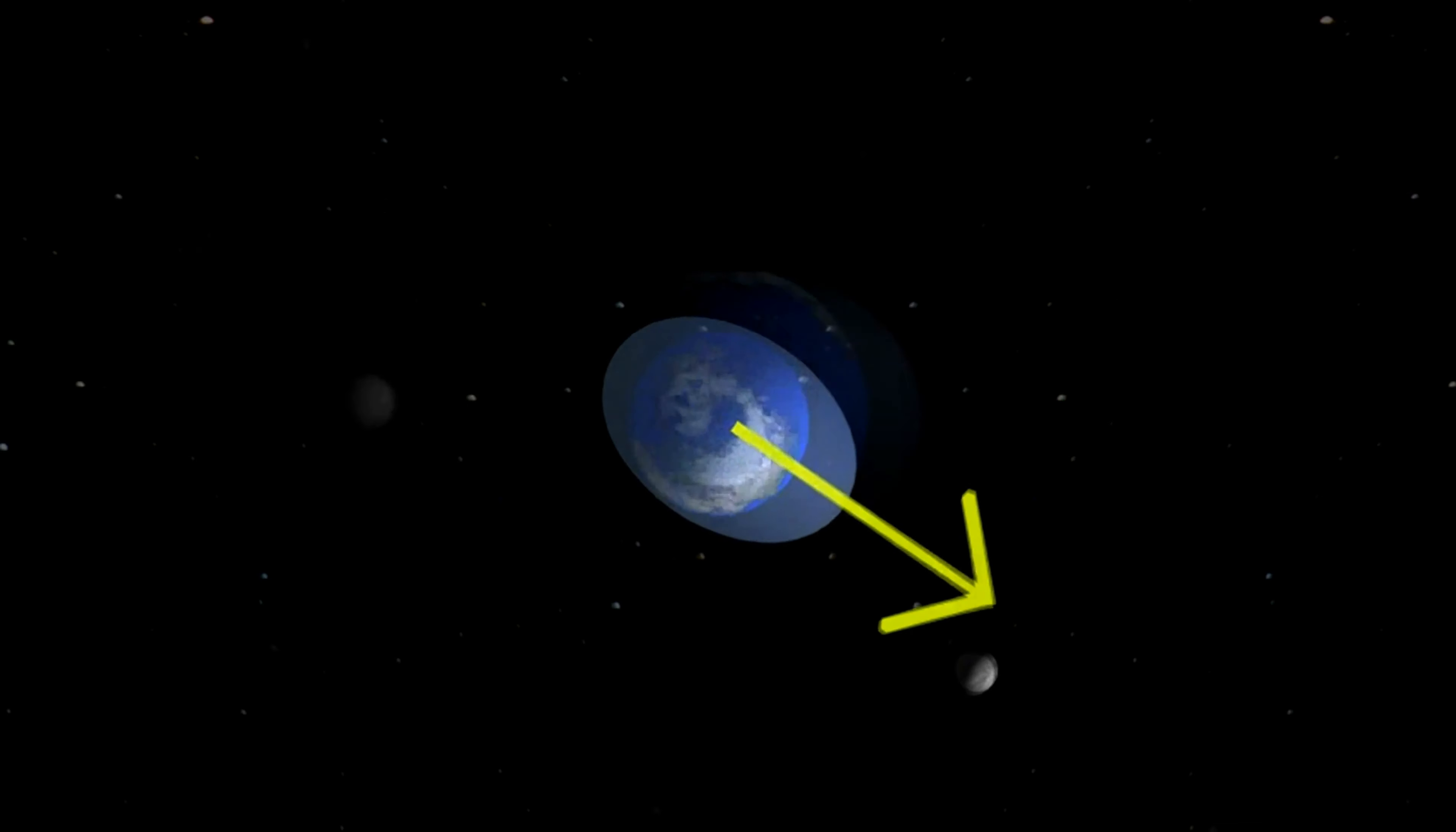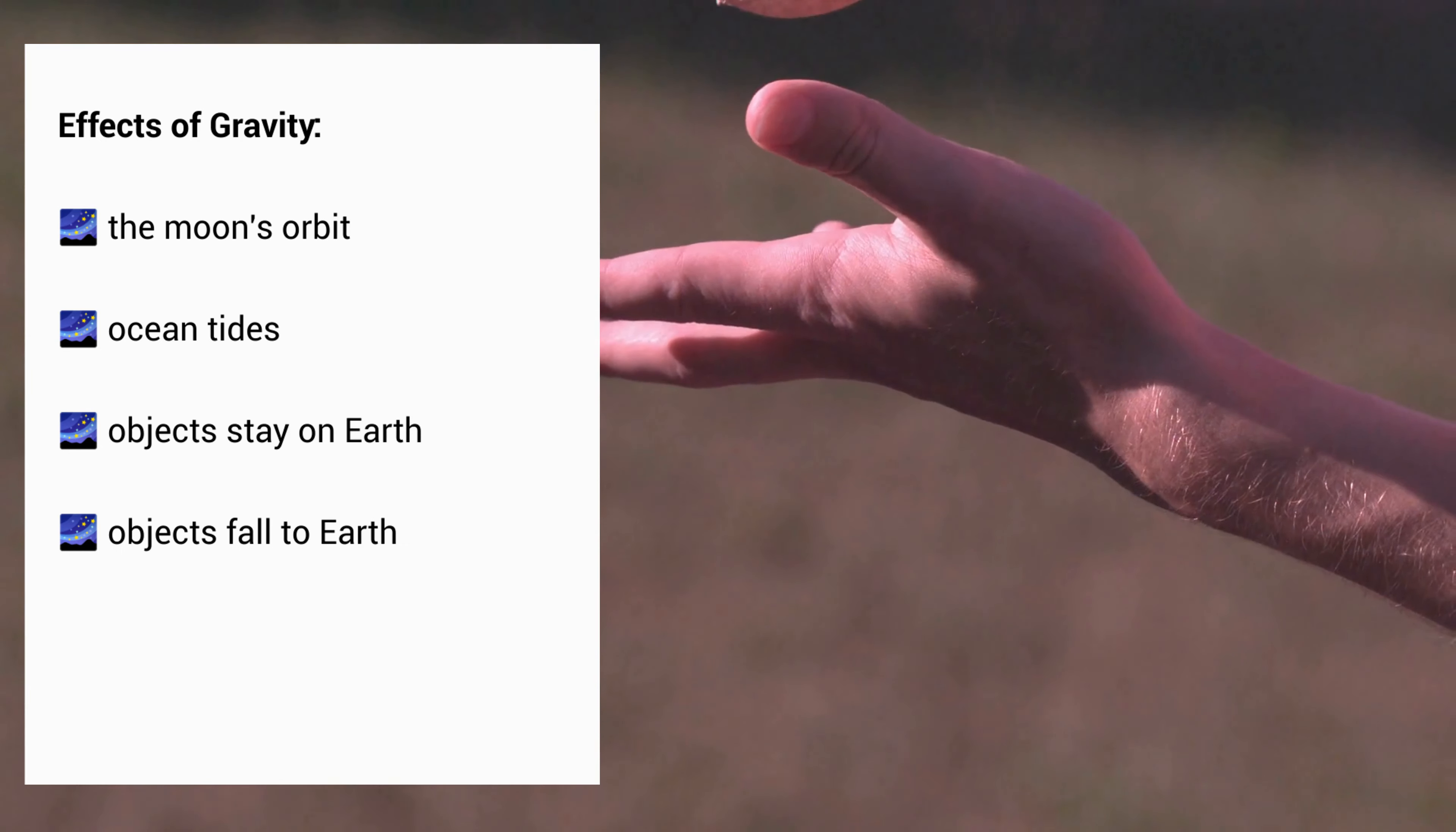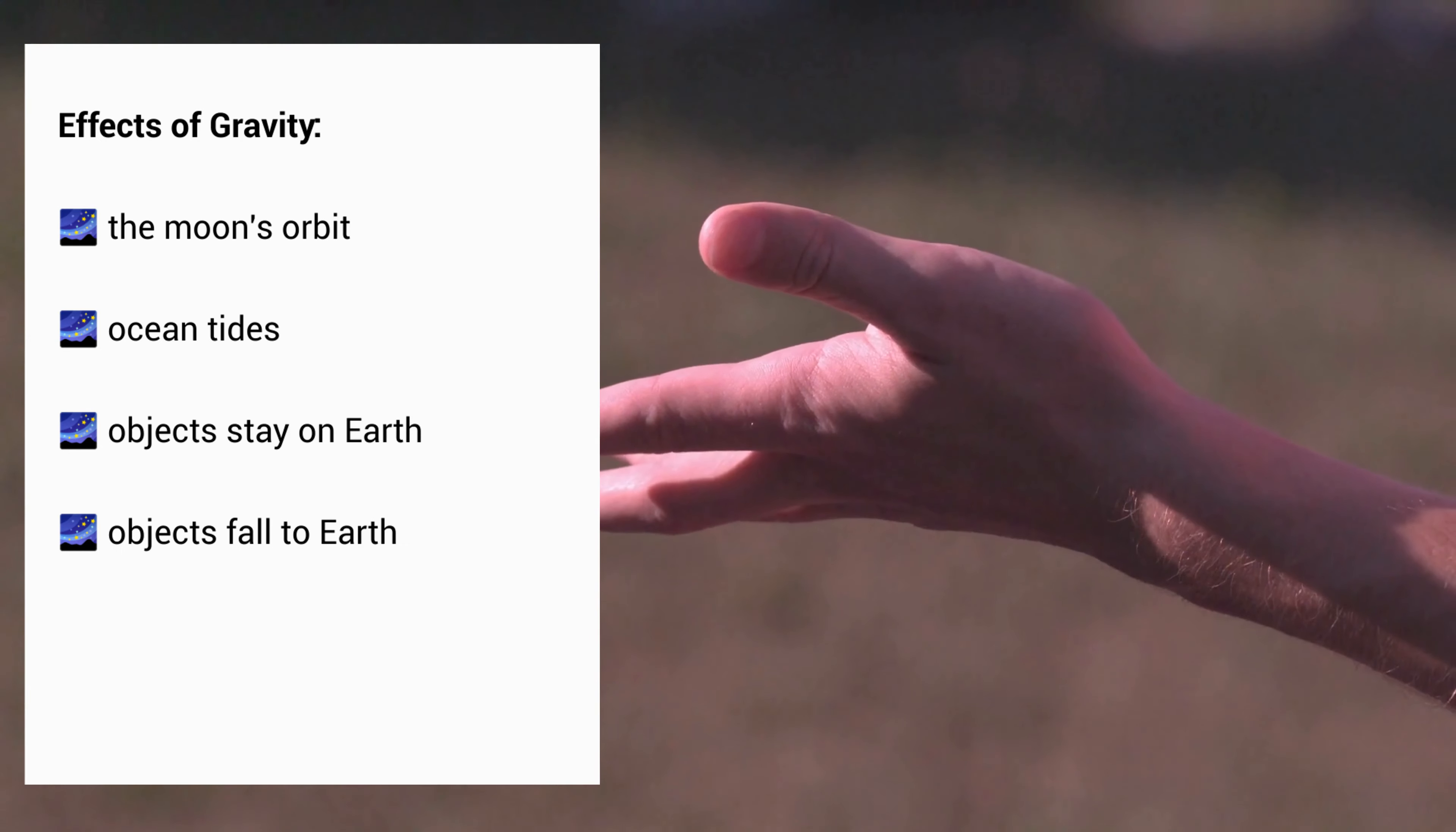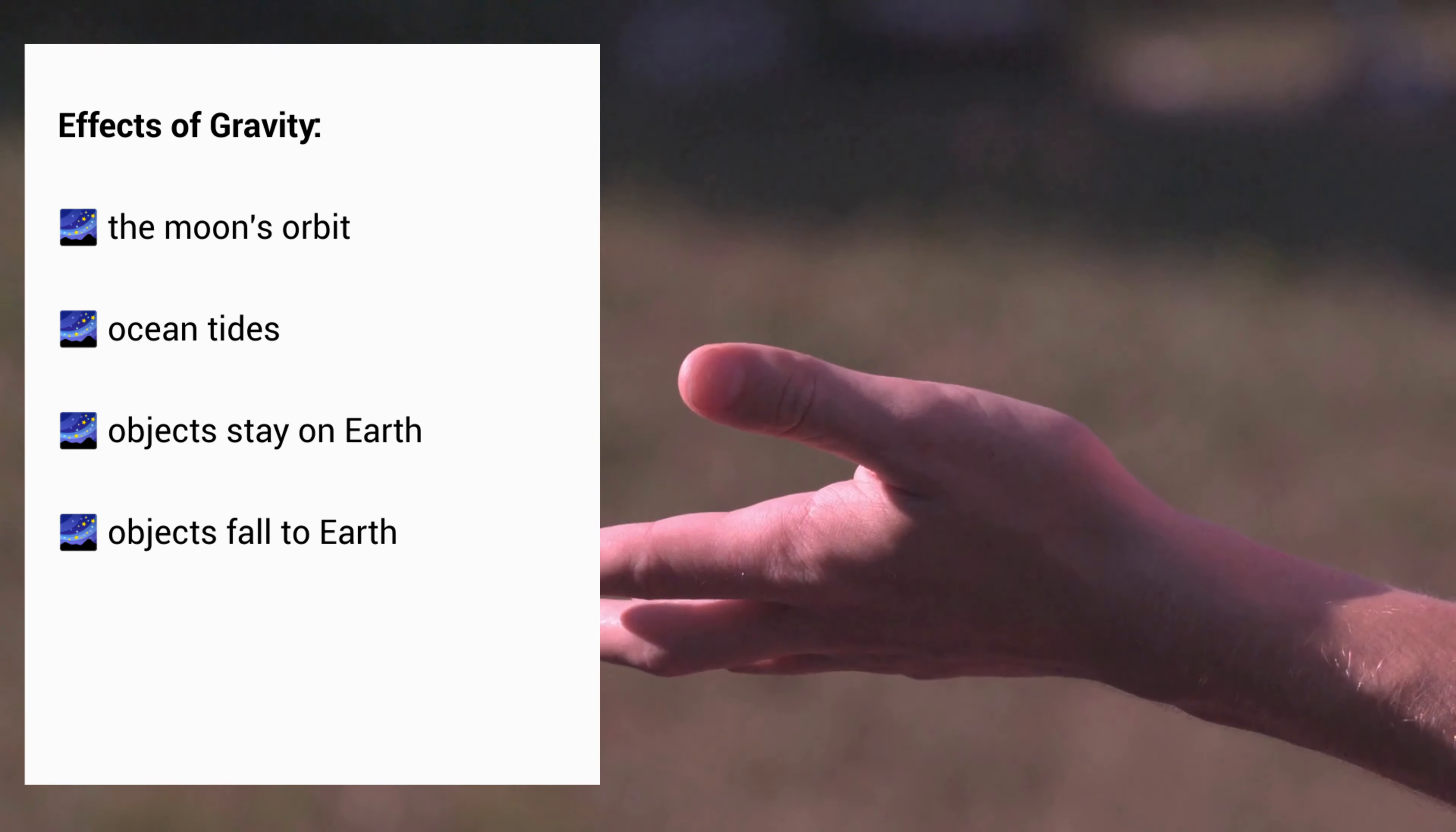So yes, the powerful effects of gravity can explain a lot of interesting things in the universe. It's what holds our moon in orbit around the earth. It's what causes ocean tides on earth day after day. Gravity is why we stay on earth and why objects we throw into the air come back down. Gravity even helps create new stars and planets by helping pull together the gases and dust that form them. We can't see gravity, but we can see its effects all around us, on earth, in our solar system, and throughout our galaxy.